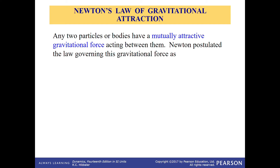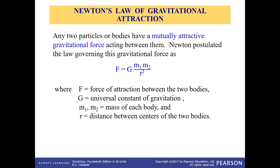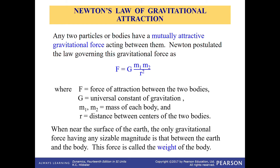Newton's law of gravitational attraction: any two particles or bodies have a mutually attractive gravitational force. This is given by F = G·M1·M2 / R², where F is the force of attraction, G is the universal constant of gravitation, M1 and M2 are the masses of the bodies, and R is the distance between their centers. Near Earth's surface, the dominant gravitational force is between the Earth and the body, which we call the weight.